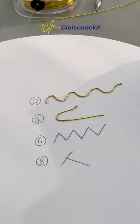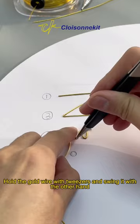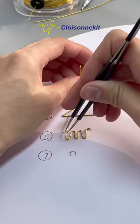Fifth pattern, continuous round turns. The same technique. Hold the gold wire with tweezers and swing it with the other hand. And repeat.